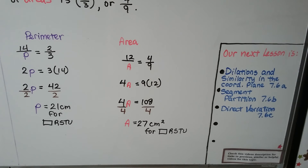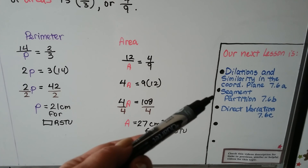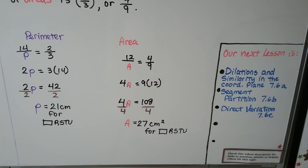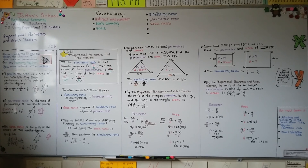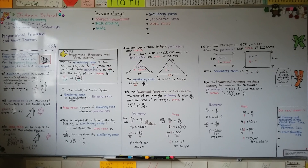Our next lesson is dilations and similarity in the coordinate plane — that's 7.6a. Then we have two more parts for 7.6: segment partition and direct variation. I hope you were able to write down the theorem and understand similarity ratio, area ratio, and perimeter ratio. Hope you're doing well — see you next time. Bye!